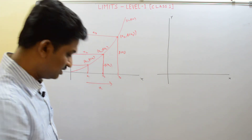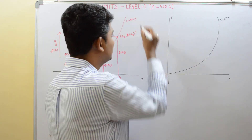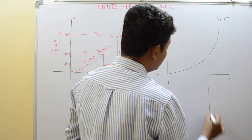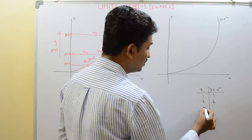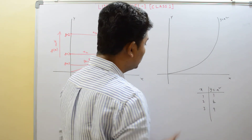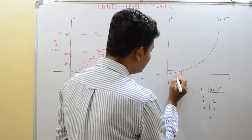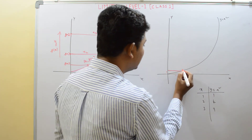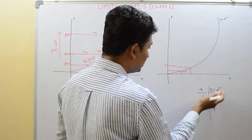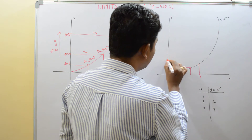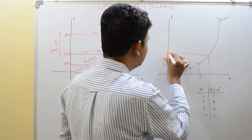Let's explain this with the example of Y equals x squared, drawing only the positive side. The table of values: when x is 1, Y is 1; when x is 2, Y is 4; when x is 3, Y is 9; when x is 4, Y is 16. So the points are (1,1), (2,4), (3,9), and (4,16) on the graph.